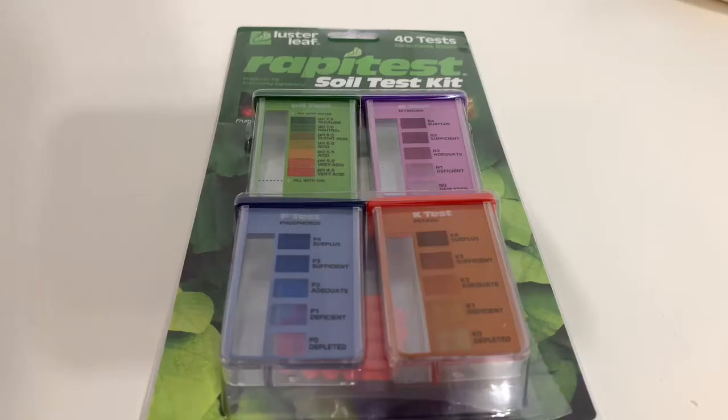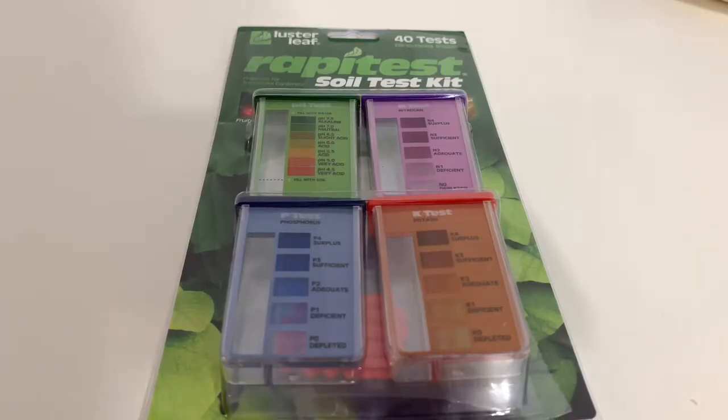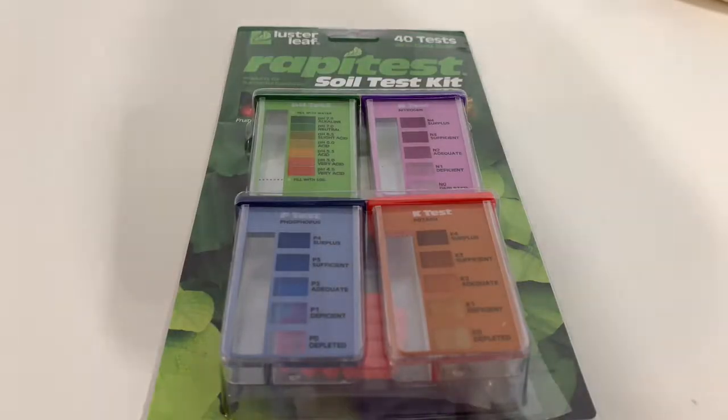I just picked up a Rapitest soil test kit. I picked it up on Amazon, and what this does is it gives you a pH test for pH balance, gives you an N test for nitrogen, a P test for phosphorus, and a K test for potash. K is also potassium, same thing.